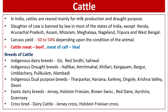Cattle in India: cattle are reared mainly for milk production and draught purposes. Slaughter of cow is banned by law in most states of India except Kerala, Arunachal Pradesh, Assam, Mizoram, Meghalaya, Nagaland, Tripura, and West Bengal. Carcass yield of cattle is usually 50 to 54 percent depending upon the condition of the animal. Cattle meat is known as beef; meat of calf is known as veal.